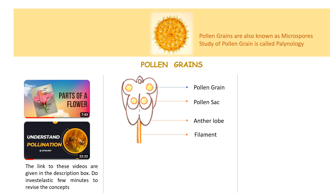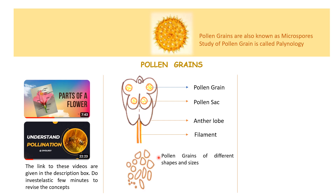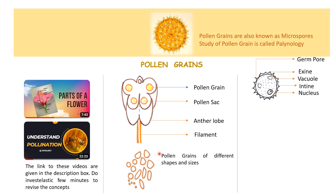Pollen grains are also known as microspores and these are reproductive units which are produced within the lobes of the anther. Pollen grains could be granular, ellipsoidal, circular, oval, triangular or of different shapes. In a typical pollen grain there is an outer coating called exine and an inner coat which is known as intine.